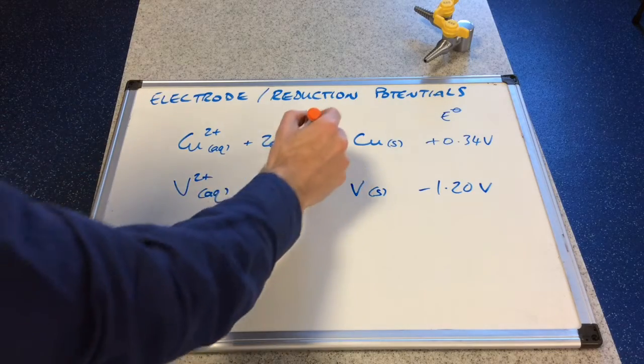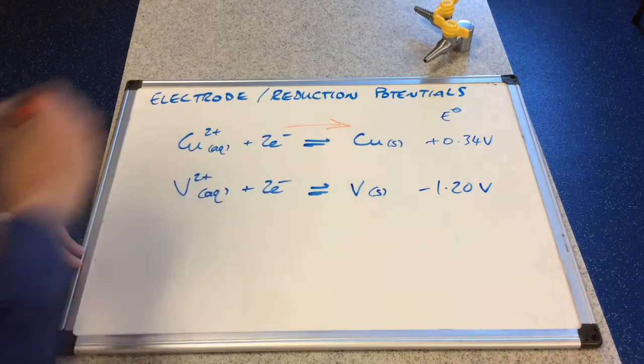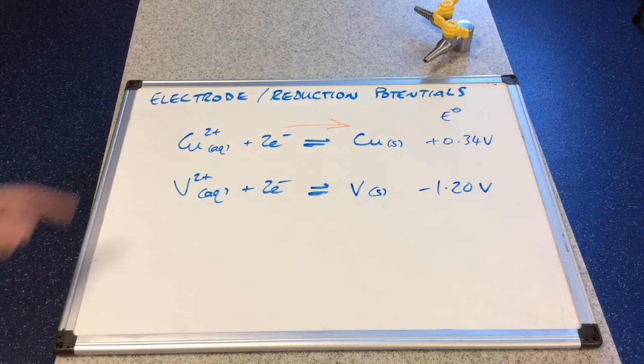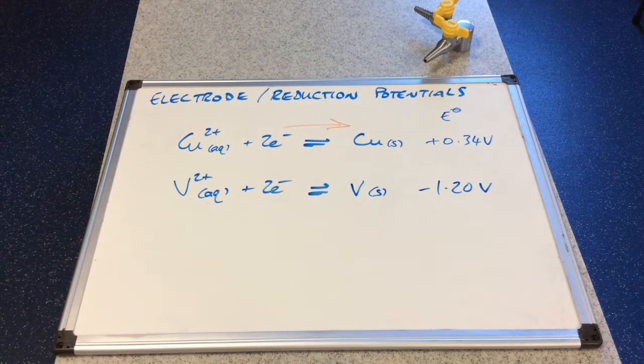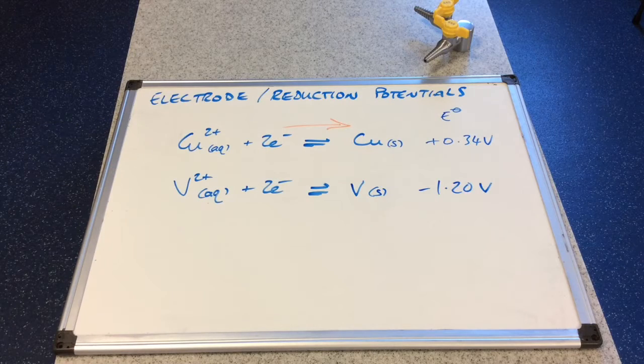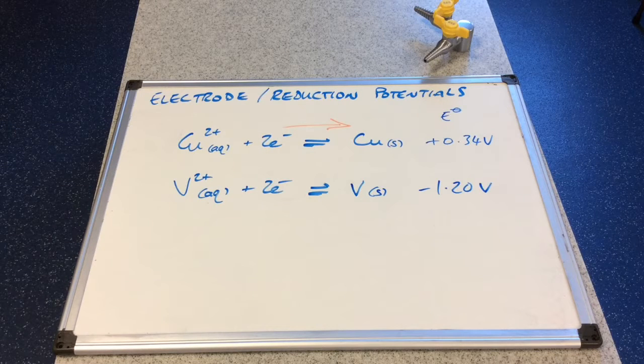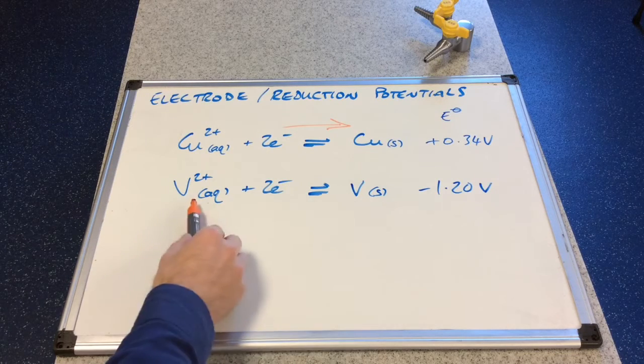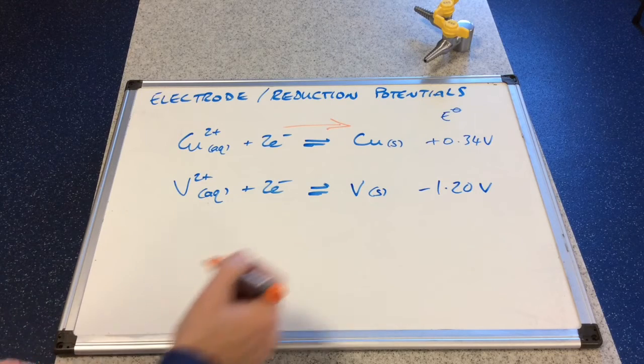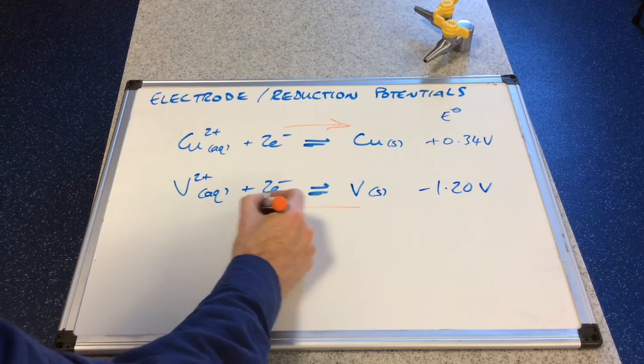So let's just take stock of what we know so far. We know that this is the more positive standard electrode potential, and so this can accept electrons more readily than the V2 plus. So if you combine these two half equations together, we actually call them half cells. What that means is this half equation here will proceed in the forward direction, because it's better at accepting electrons. And so what will that do to this half equation? Well it's going to force it in the reverse direction.